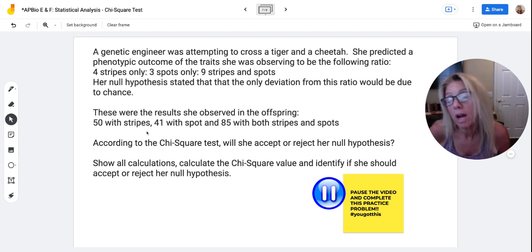There were 50 with stripes, 41 with spots, and 85 with both stripes and spots. So you would need to add that up to calculate your percentage of what you would get of each one, the actual number.